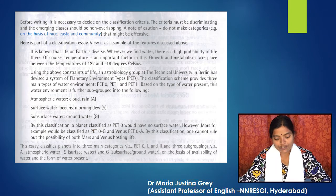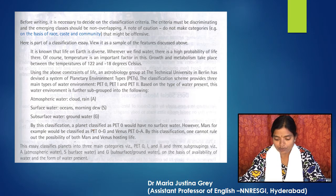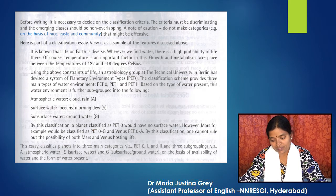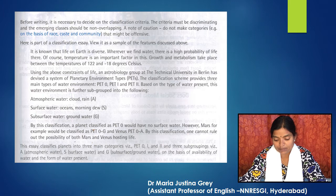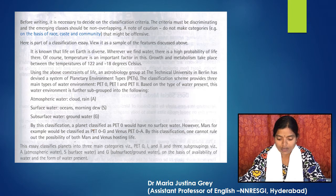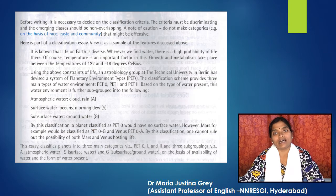By this classification, a planet classified as PET-0 would have no surface water. However, Mars, for example, would be classified as PET-0G, and Venus as PET-0A. By this classification, one cannot rule out the possibility of both Mars and Venus hosting life.